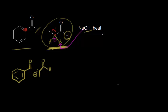Now we have a nucleophile — I'll draw those electrons in magenta. This nucleophile is going to attack the electrophilic portion of the benzaldehyde molecule. The oxygen is partially negative and the carbonyl carbon is partially positive, so that's the electrophilic portion. The lone pair of electrons on the carbanion carbon attacks that carbonyl carbon, pushing the electrons off onto the oxygen, forming an alkoxide intermediate.